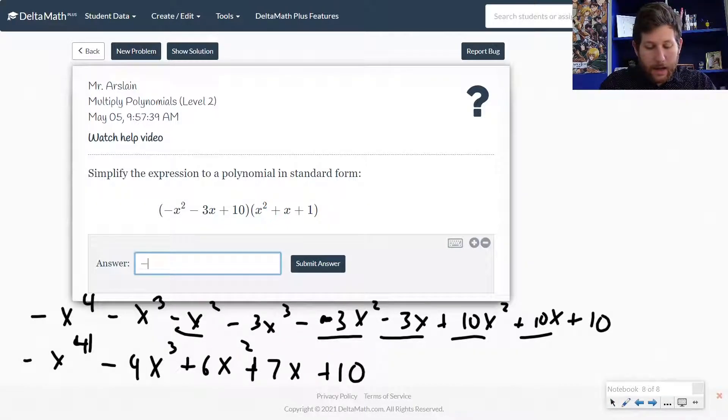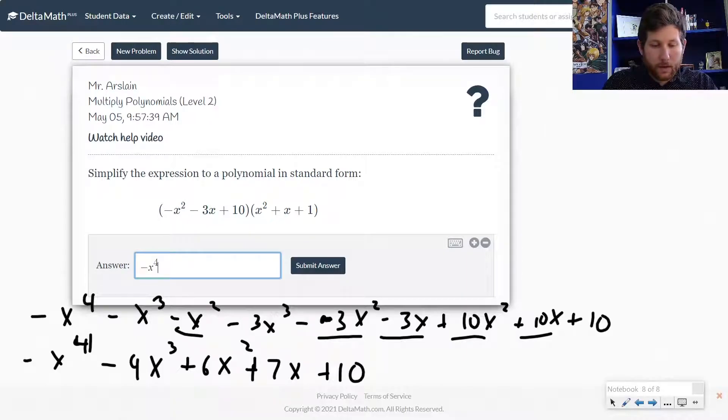So I've got negative x to the fourth minus 4x cubed plus 6x squared plus 7x plus 10. All right, so here we go. Let's just make sure we've typed this in correctly.